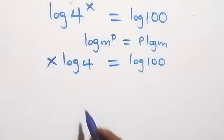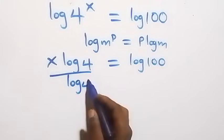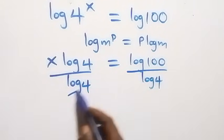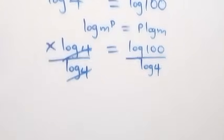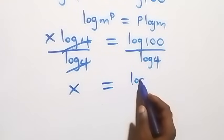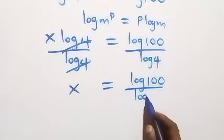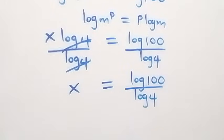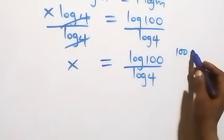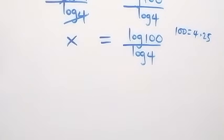Next, we divide both sides by log 4. On the left side, log 4 cancels, leaving x, which equals log 100 over log 4.